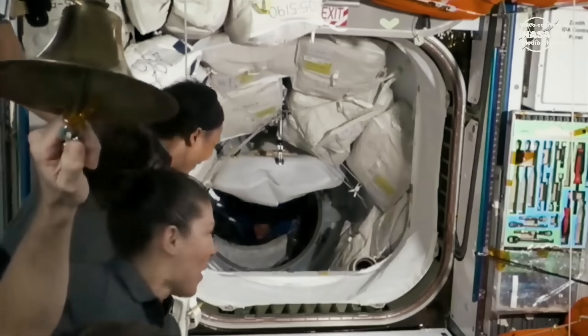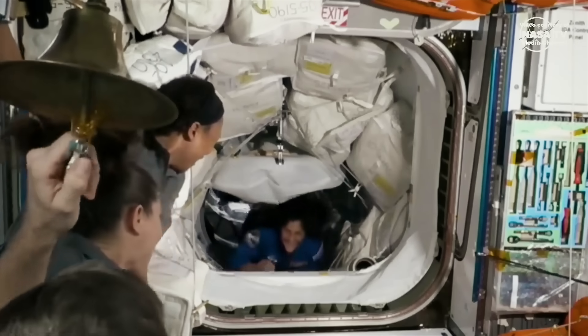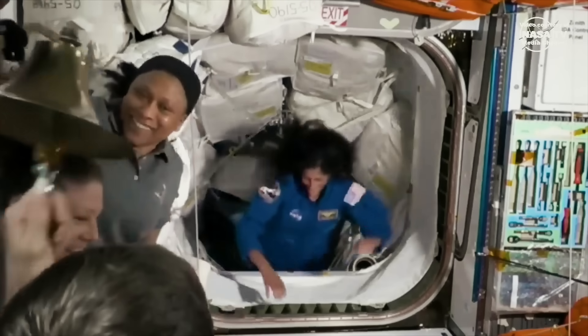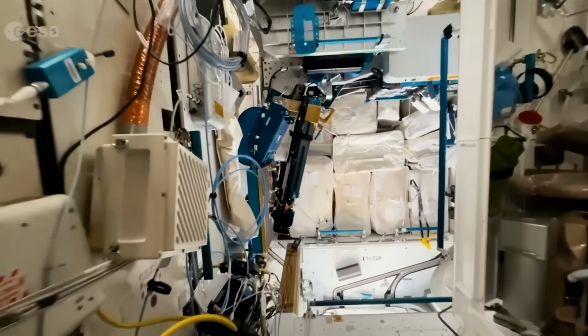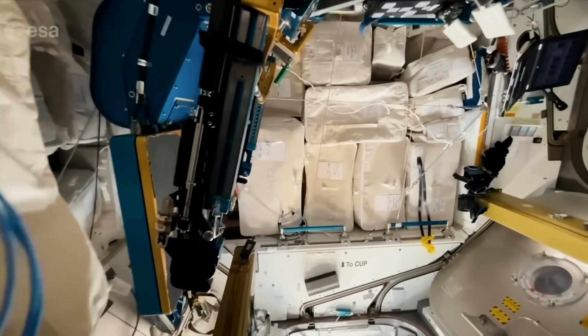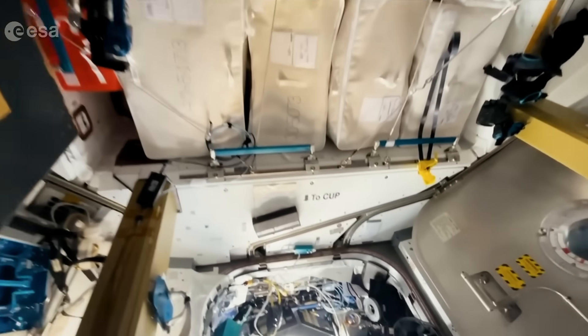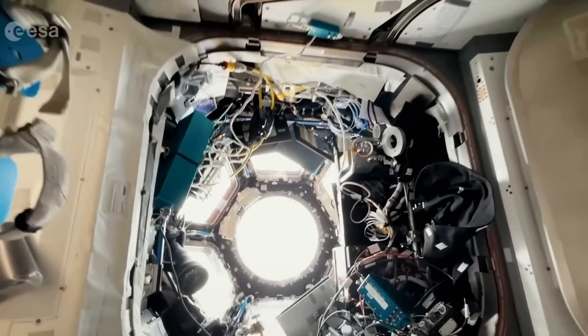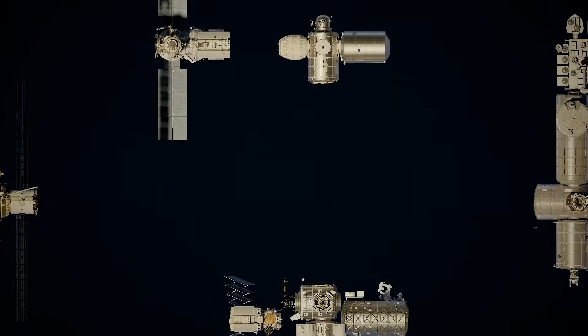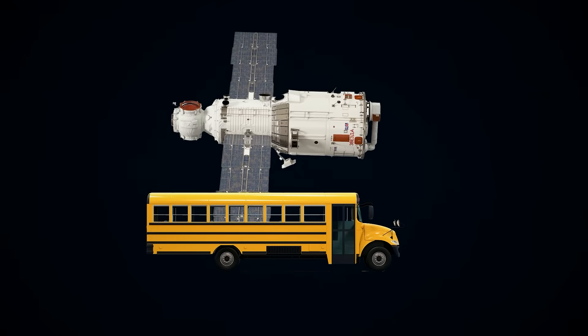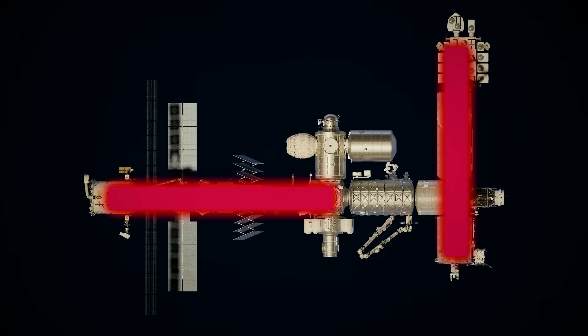When the hatch finally opens, the crew floats into their new home, and this is where the real experience begins. The ISS isn't the carpeted open concept layout you've seen in a Star Trek TV show. It's more like a floating tunnel system, a series of connected modules, each about the size of a small bus, arranged in a T-shaped layout.